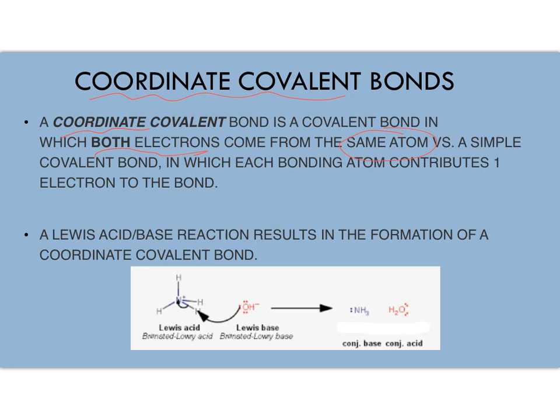In a Lewis acid-base reaction, coordinate covalent bonds are always formed. It is the Lewis base, the electron pair contributor, that provides both electrons to make a new covalent bond with the Lewis acid.